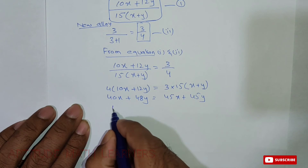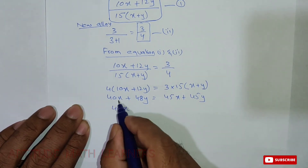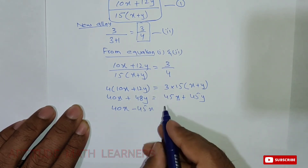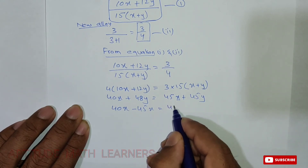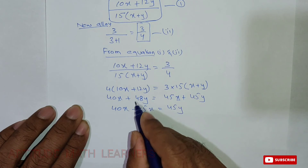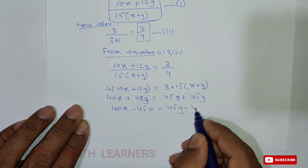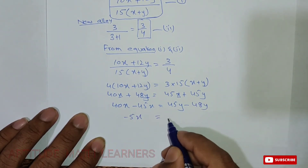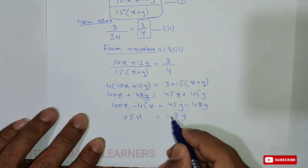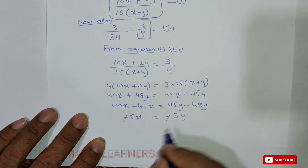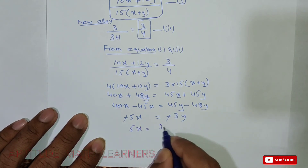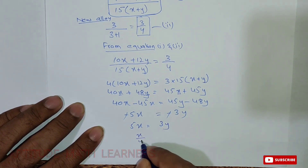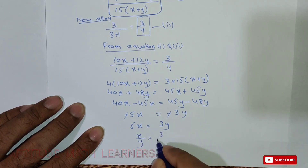Solving further: 40X + 48Y = 45X + 45Y. Rearranging: 40X − 45X = 45Y − 48Y, which gives −5X = −3Y. The negatives cancel, so 5X = 3Y. Bringing it to ratio form: X/Y = 3/5.